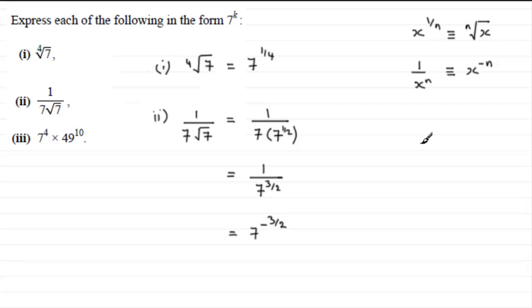Now for the last part, part 3, we've got 7 to the power 4 multiplied by 49 to the power 10. For this one we take 7 to the power 4, and for 49 that's 7 squared. 7 squared is 49 and all of this is to the power 10.